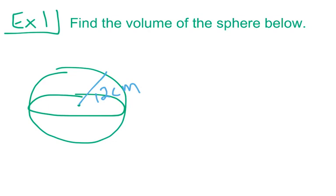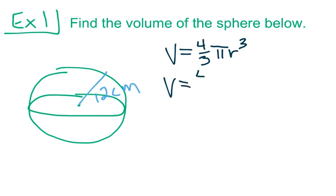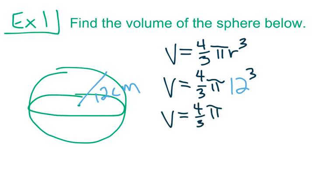We go back to our volume formula: V is equal to 4 thirds pi r cubed. We substitute our value for the radius in for r, giving us V is equal to 4 thirds times pi times 12 cubed. We definitely need our calculators for this. To get our exact volume, we first cube 12: 12 times 12 times 12 is 144 times 12, which is 1,728. So our volume is 4 thirds times pi times 1,728.